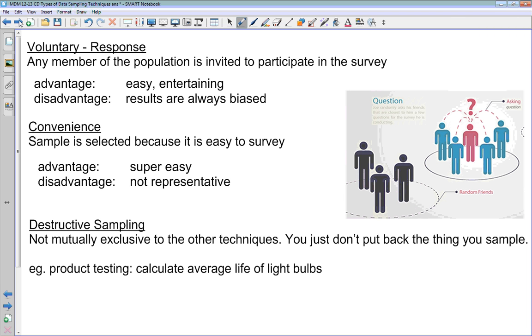Next up is convenience sampling, where your sample is selected simply because it's really easy to select that particular sample. We've got another picture here involving Bob. Bob has a question that he wants to ask, and he's basically asking the people who happen to be standing next to him. These other people over here are standing a little bit further away. He'd have to walk over there to talk to them and that's too much work for Bob. So he's just asking the people who happen to be standing close to him.